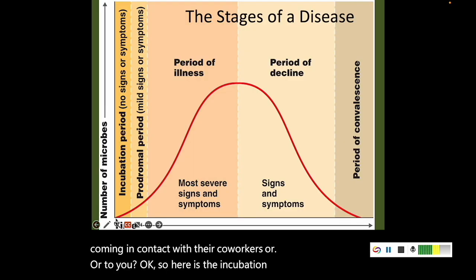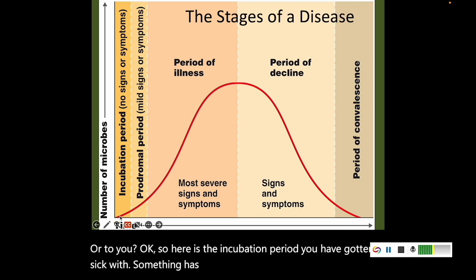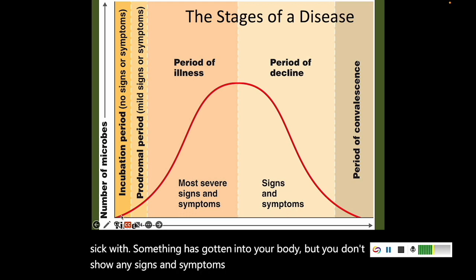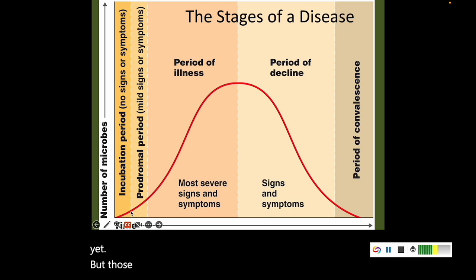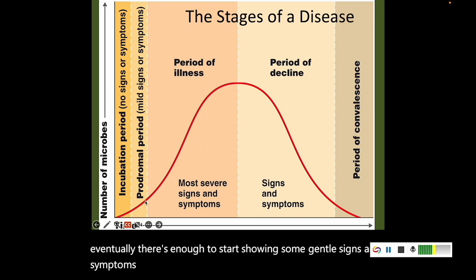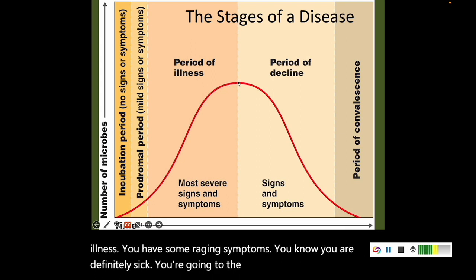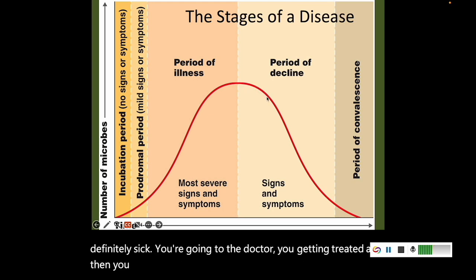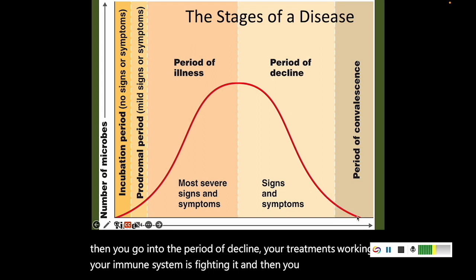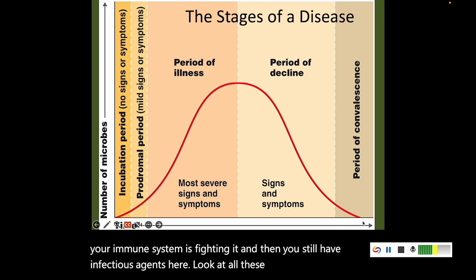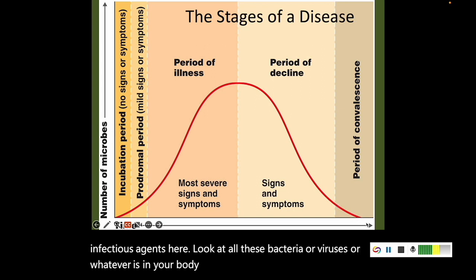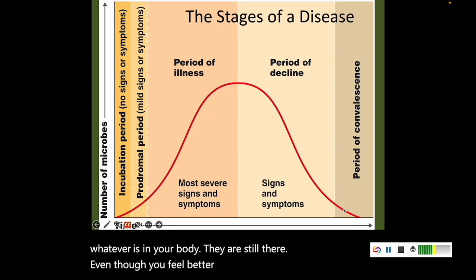To review: in the incubation period, something has gotten into your body but you don't show any signs and symptoms — you don't have a lot of microbes yet, but those infectious microbes are starting to grow. Eventually there's enough to start showing some gentle signs and symptoms — that is your prodromal period. Then the period of illness, you have raging symptoms, you know you're definitely sick, you go to the doctor, you get treated. Then the period of decline — your treatment's working, your immune system's fighting it — but you still have infectious agents in your body, even though you feel better. So take that last day off from work to not spread that infection.